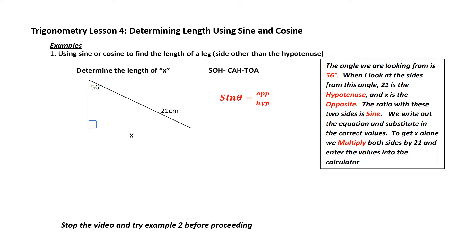We are determining the value of x. When I observe this triangle, I recognize that it's a right triangle with sides and angles. Therefore, I'm pretty sure I can use trigonometry on it. My first step is to identify what is the angle that I'm working from — that is 56 degrees. From here, I now need to identify the sides that I'm using. 21 is the hypotenuse because it is across from the right angle.